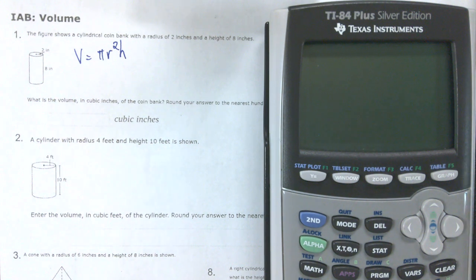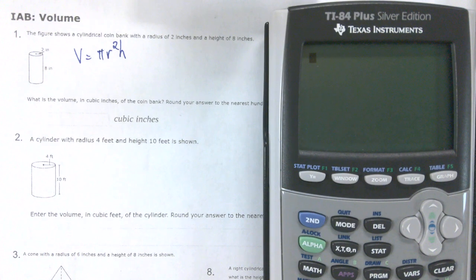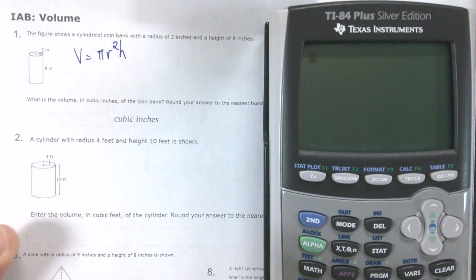Now if we're going to find the volume of a cone, it's that same exact formula, just divided by 3, right? So we're going to square our radius, multiply it by pi, and multiply it by the height.